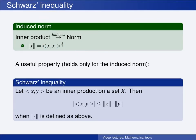For this induced norm, we have the well-known inequality called the Schwarz inequality or Cauchy-Schwarz inequality. It says that the absolute value of the inner product between two elements x and y is less than or equal to the norm of x times the norm of y. Note that this inequality only holds for the norm that is induced by the inner product.